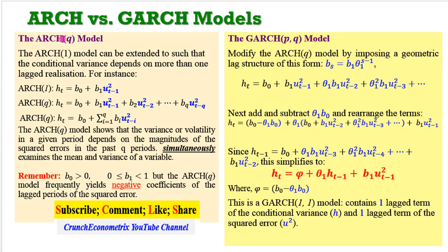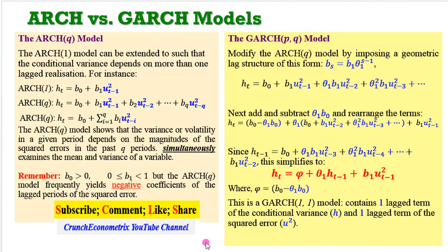A typical ARCH(Q) model, as you can see on the screen, resembles a moving average process — on the right-hand side are lags of the squared error term. This shows that the variance of volatility in a given period depends on the magnitudes of the squared errors in past Q periods. The model also simultaneously examines the mean and variance of a variable. In the ARCH(Q) model, beta-0 must be positive, while beta-1 must lie between 0 and 1. But a GARCH(Q) model can frequently yield negative coefficients because the model becomes over-parameterized.